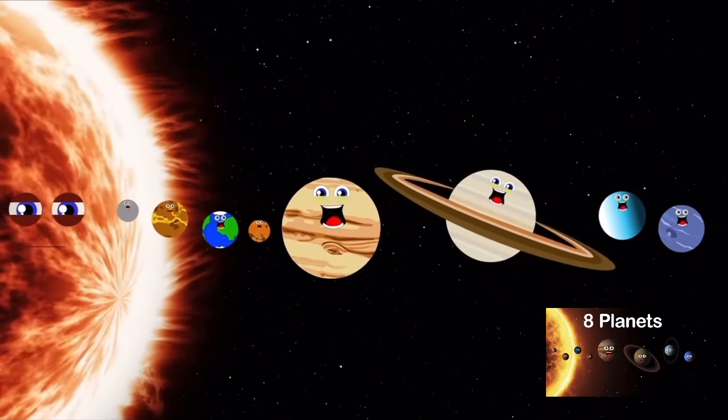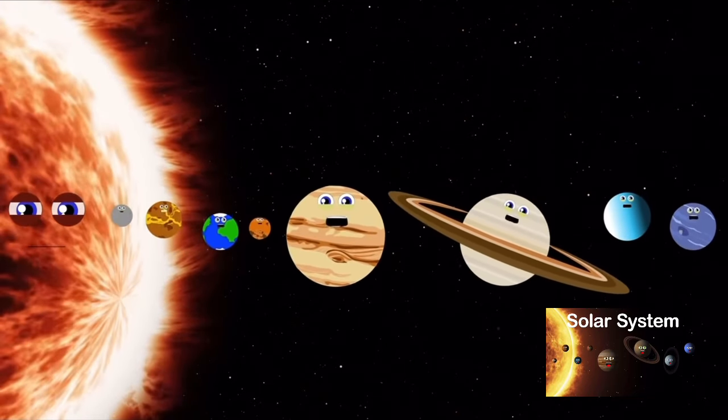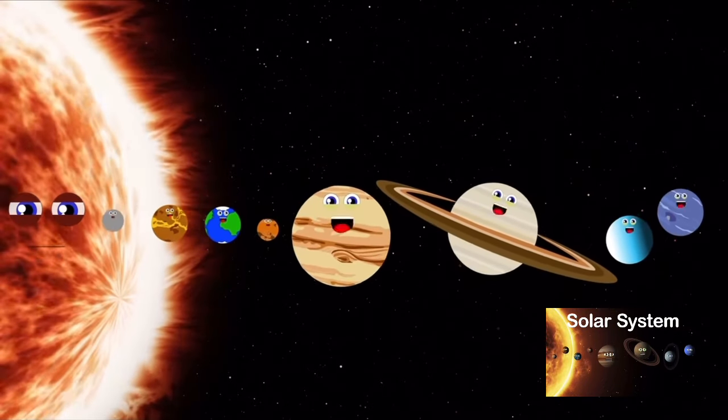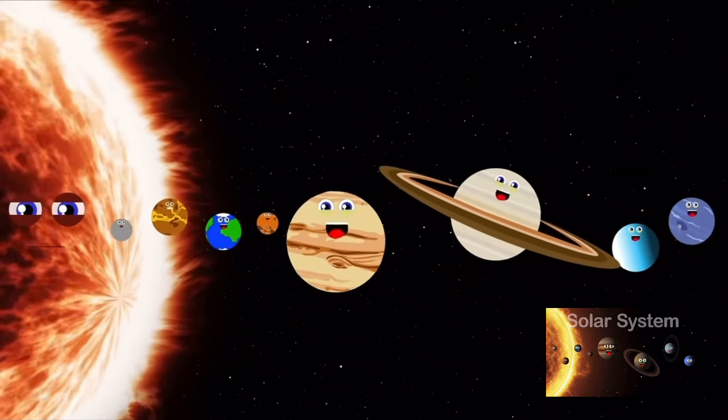There are eight planets in the solar system, and we revolve around the sun. Join us to learn about the different planets, now sing along and have some fun.